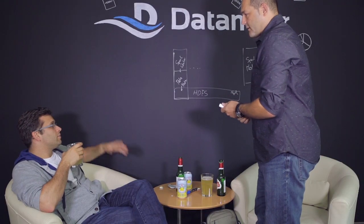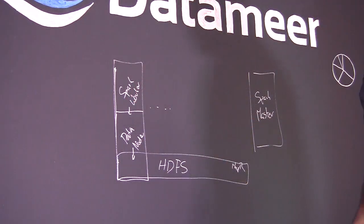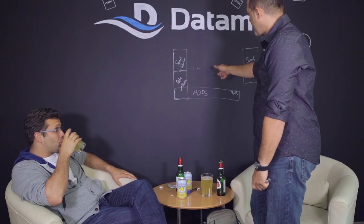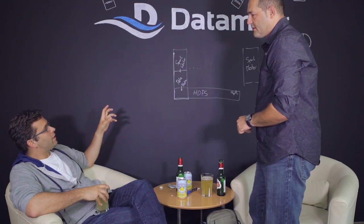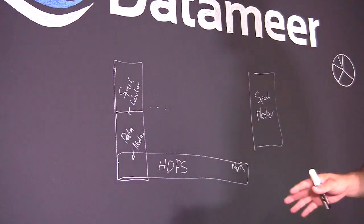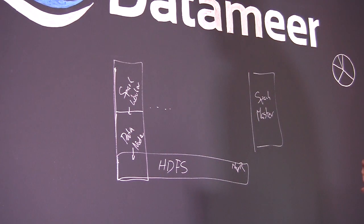Spark directly integrates with the data node by installing them on the same box and accessing HDFS. The name node really just finds out where the blocks are located, then schedules the jobs — very similar to what the task tracker would do. Spark basically implements its own task scheduling; you'd only use the file system, not the job or task tracker APIs.